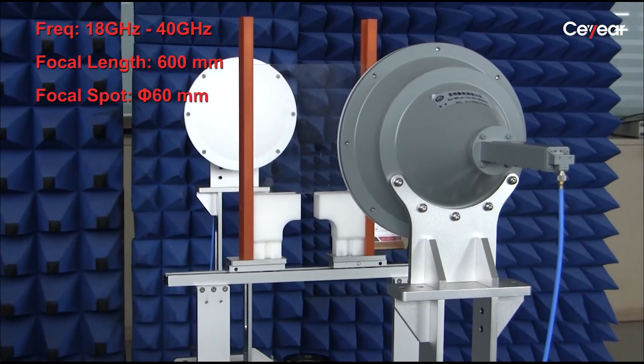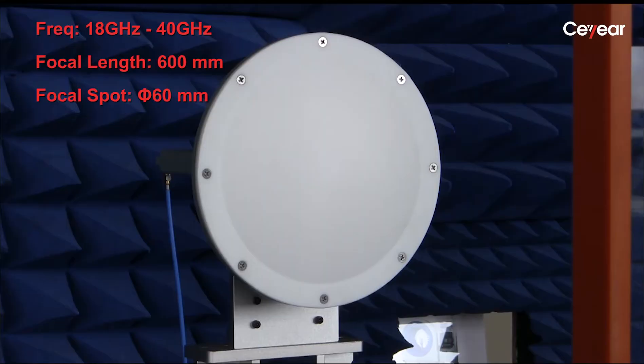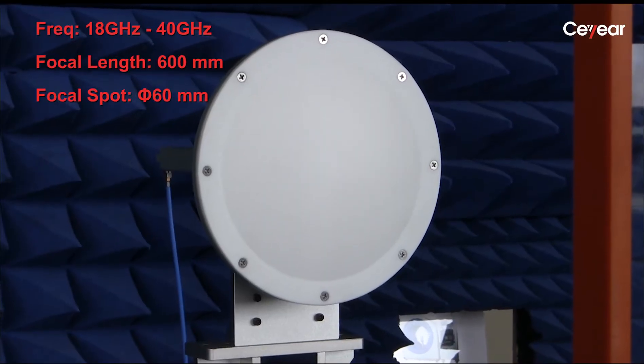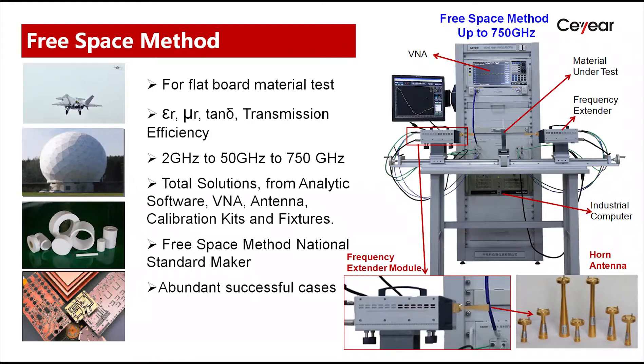This lens antenna is spot-focusing and normally can work at 40 GHz. For mmWave and Terahertz material test above 40 GHz, the horn antenna is well enough to characterize the material properties. The frequency can cover up to 750 GHz and even higher.